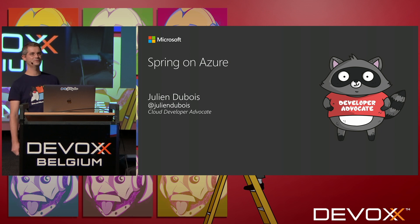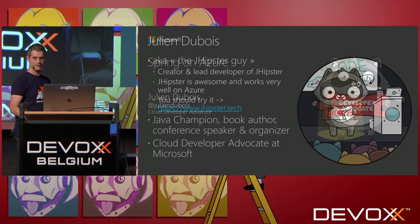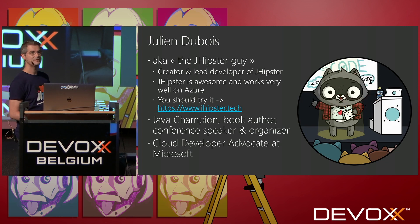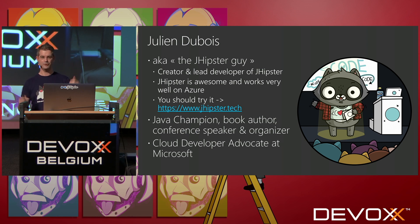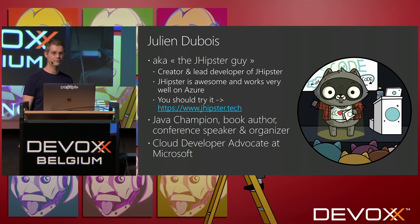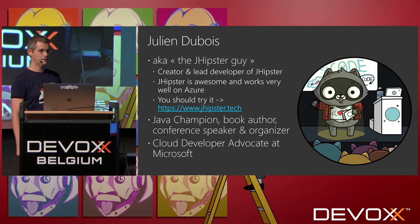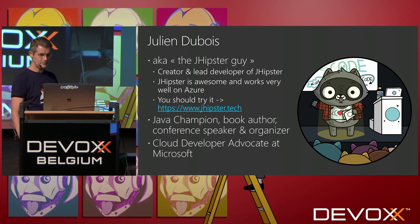Hello everyone. Welcome to this session on Spring on Azure. I'm Julien Dubois. Most people know me as the JHipster guy. I'm the creator and still lead developer of the JHipster open-source project, which is very popular. We've got 15,000 GitHub stars now — a pretty big project. A lot of people are using it, and it works very well on Azure.